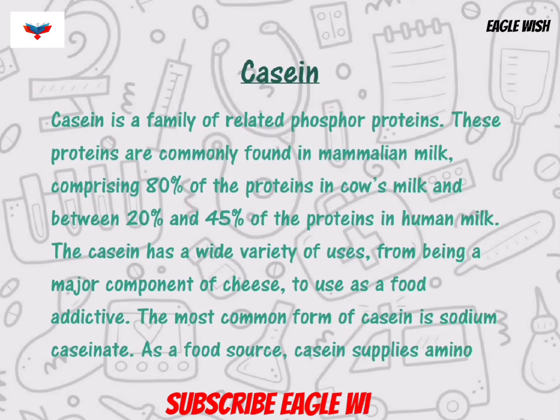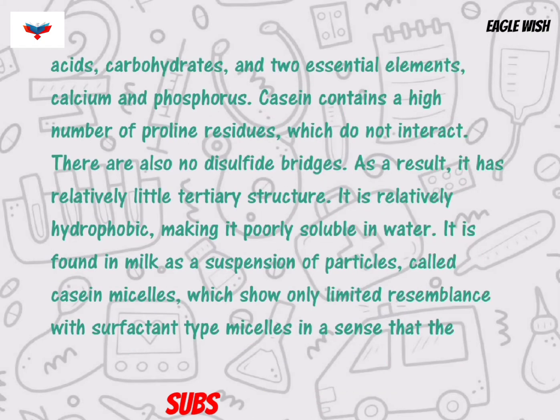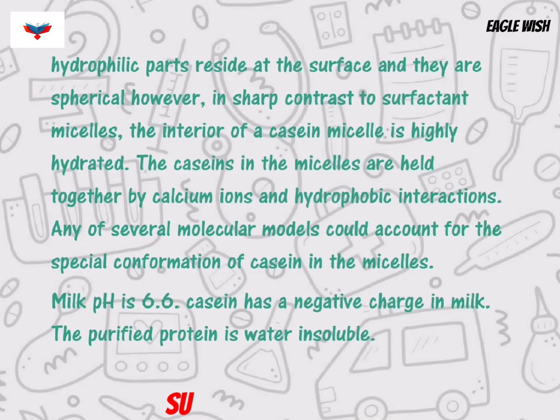After that, write about casein. Casein is related to phosphoprotein. It is commonly found in mammalian milk, and so on.